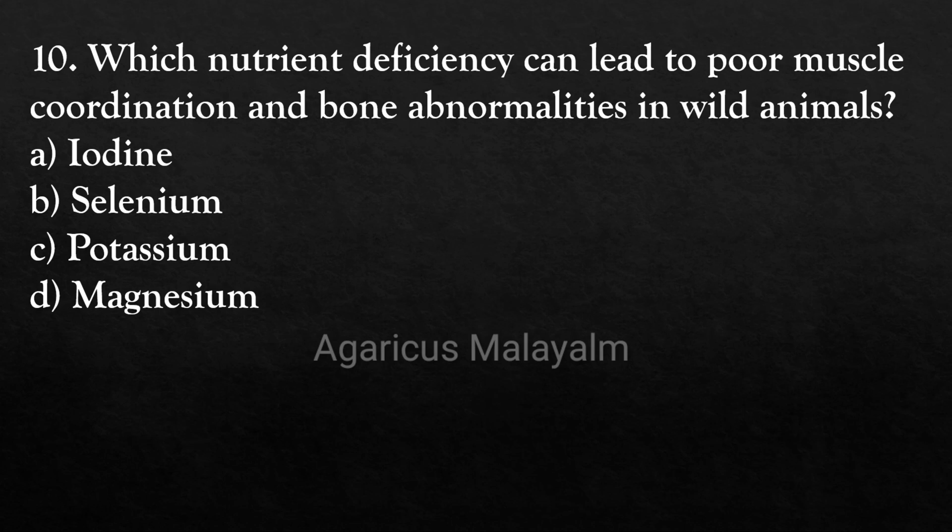Tenth question: which nutrient deficiency can lead to poor muscle coordination and bone abnormalities in wild animals? Answer options: option A, iodine; option B, selenium; option C, potassium; option D, magnesium.